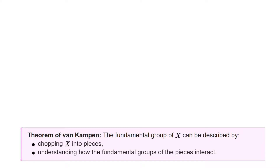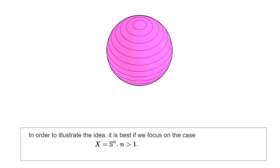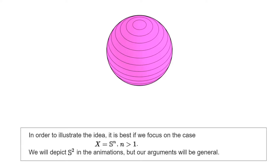In order to see the idea at work, it is probably best if we start with a topological space that can be split into very simple pieces. For this reason we will use the higher dimensional spheres as our initial example. In the animations we will see S2, but I invite you to check that all the arguments we do are general and apply to all the higher dimensional spheres. The statement we want to prove is that the fundamental group of Sn is 0 as long as n is at least 2. In particular, this shows that the higher dimensional spheres are not homotopy equivalent to S1, because the circle has non-trivial fundamental group.